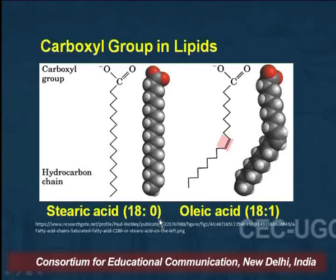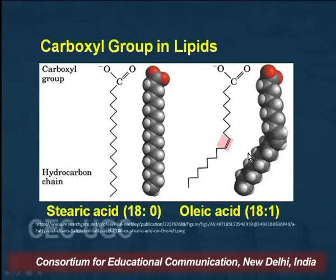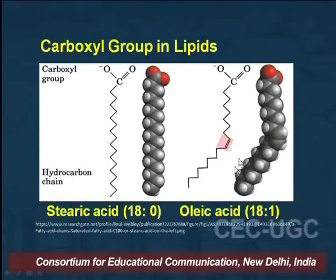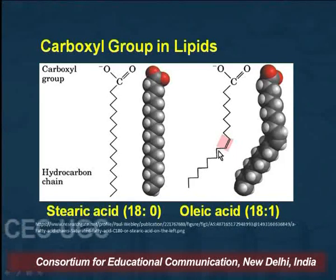Oleic acid is indicated as 18:1 — it has 18 carbons and a degree of unsaturation of 1, meaning there is one double bond in the molecule.